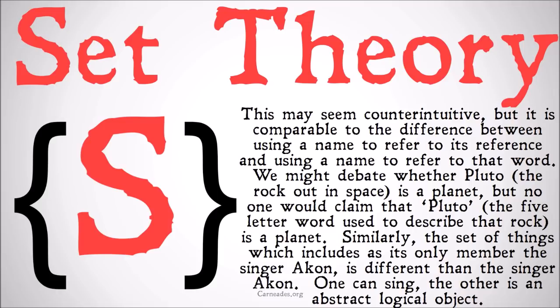Similarly, the set of things which includes as its only member the singer Akon is different than the singer Akon. The set which includes only Akon isn't just Akon — it is a set. It is a mathematical object in the same way that 'Pluto' is a word, not a planet. The set of Akon is an abstract logical object. Akon is a singer.